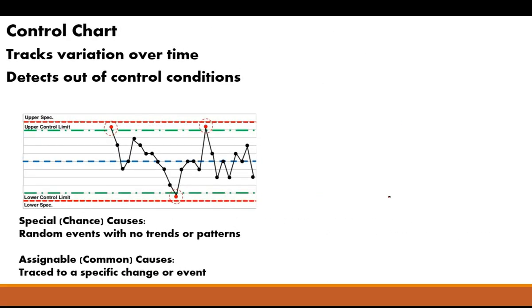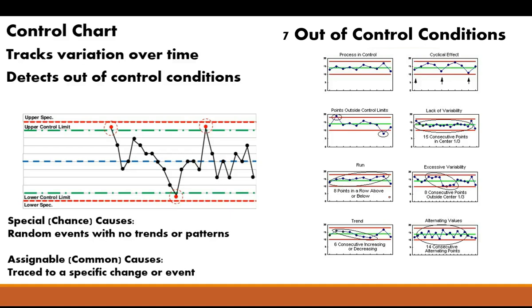So if we take this control chart and we start considering all the different things that could happen to the process, we can start to realize there's a pattern to when things start going out of control. And what we can see is that there are actually seven out of control conditions. Seven out of control conditions where we can start detecting that there's a problem with the process.